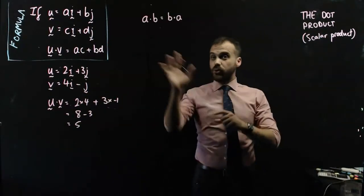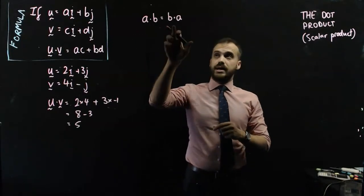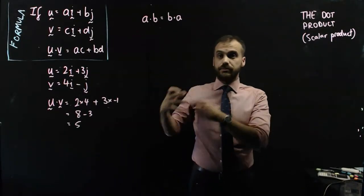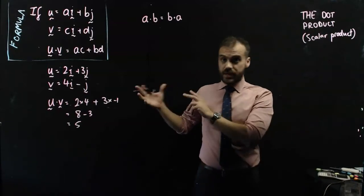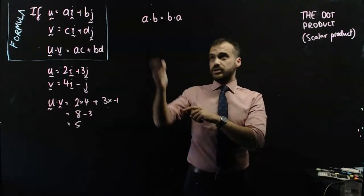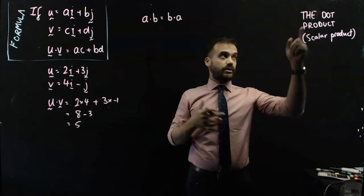It doesn't matter what order you do it in, a dot b would be the same as b dot a. We say that's commutative. Matrices isn't commutative under multiplication, but the dot product, or the scalar product, is commutative.